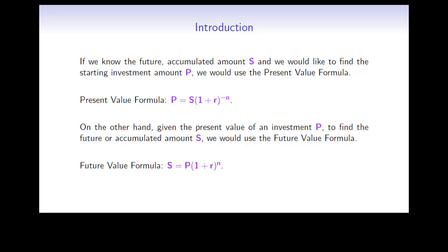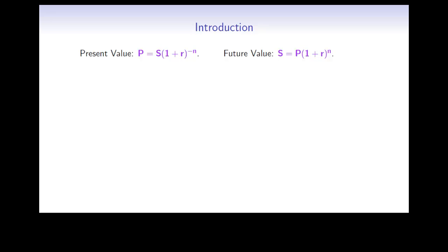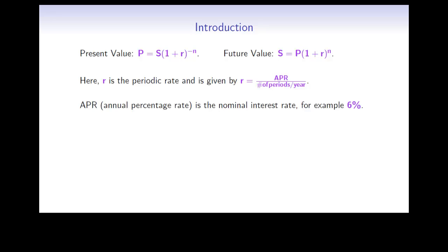Let's take a closer look at these two formulas. R is the periodic rate and is given by APR divided by the number of periods per year. APR, also known as annual percentage rate, is the nominal interest rate, for example 6%. The number of periods per year is determined from the wording — for example, quarterly compounding would mean 4 times a year, semi-annual compounding 2 times a year, and weekly compounding 52 times a year.